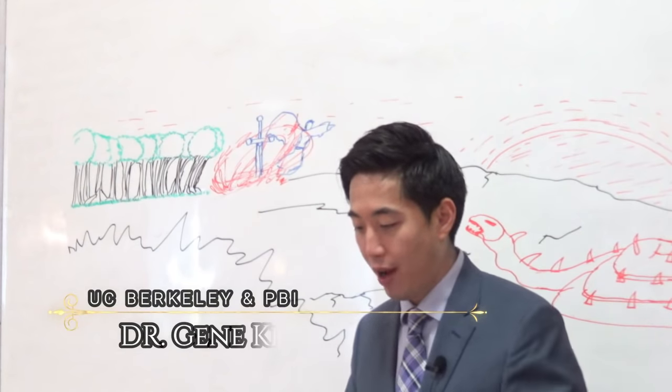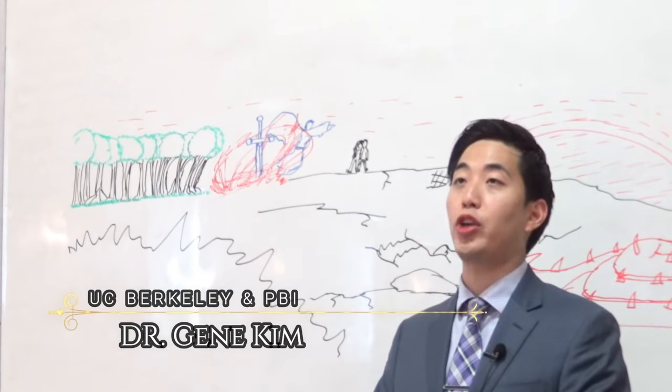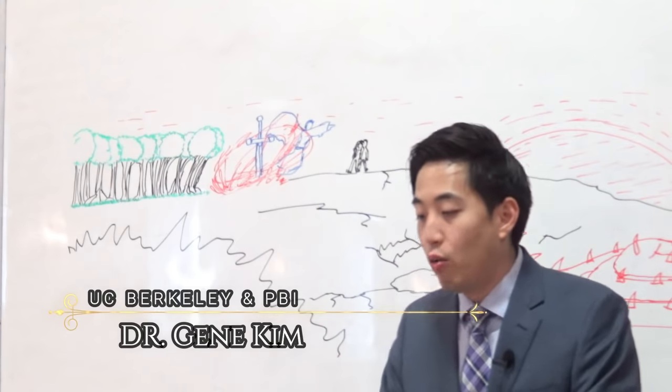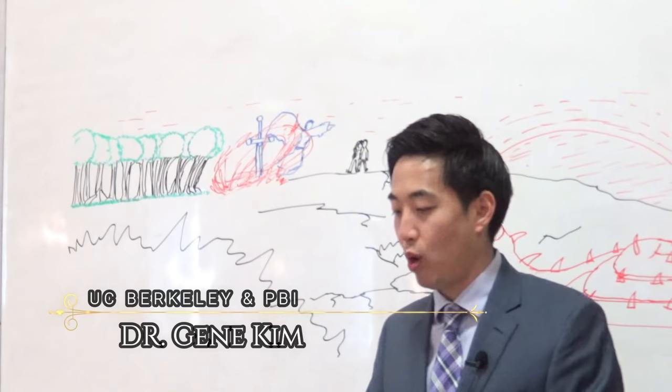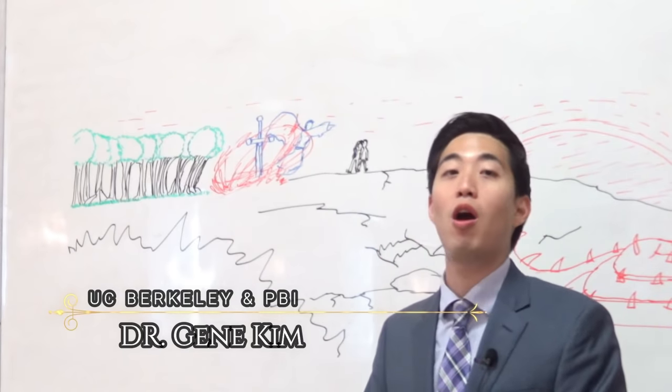Alright, as I've mentioned to you before at verse 9, the Lord asked a question to man. Why? To get conviction out of him. It's not because God is dumb and stupid where he says, Adam, I don't know where you are. Where are you?